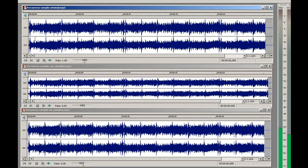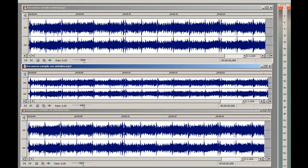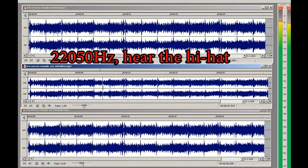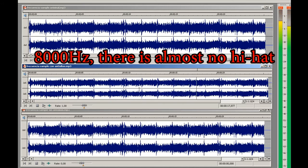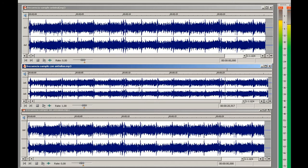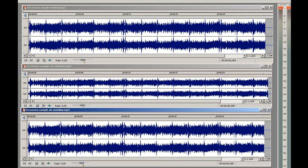Here is a sound recorded at 44,100 Hz, the CD standard. We are going to hear what happens when the frequency rate is lower. Without an anti-aliasing filter, we will still hear the hi-hat, but at lower frequencies.